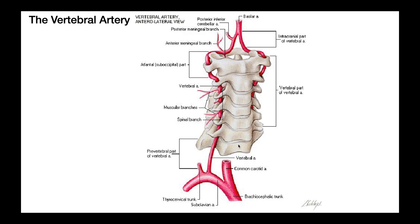If you look at all of these cervical vertebrae — we can see it really well on the top one, the atlas — you'll notice on either side there are transverse processes that stick out. Every vertebra has transverse processes, but in the cervical spine these transverse processes have holes. These holes within the transverse processes are called transverse foramina. Since we're looking at an anterior view, this one is the right transverse foramen, and this one over here is the left transverse foramen.